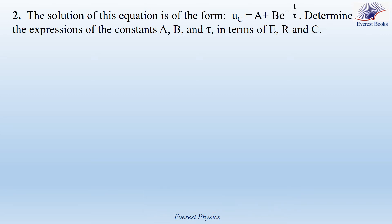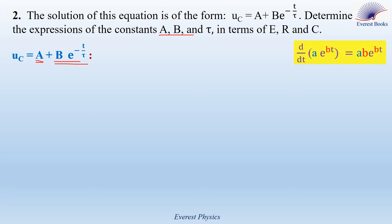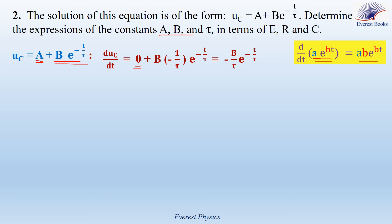Let's move to part 3. The solution of this equation is of the form UC equals A plus B times e to the power minus t over tau. To determine the expressions of the constants, we must differentiate UC with respect to time and substitute its derivative into the differential equation. The derivative of A equals 0 because A is constant. If you have a function A times e to the power Bt, where A and B are constants, then its derivative with respect to time is AB times e to the power Bt. So dUC by dt equals 0 plus B times minus 1 over tau times e to the power minus t over tau, which gives minus B over tau times e to the power minus t over tau.